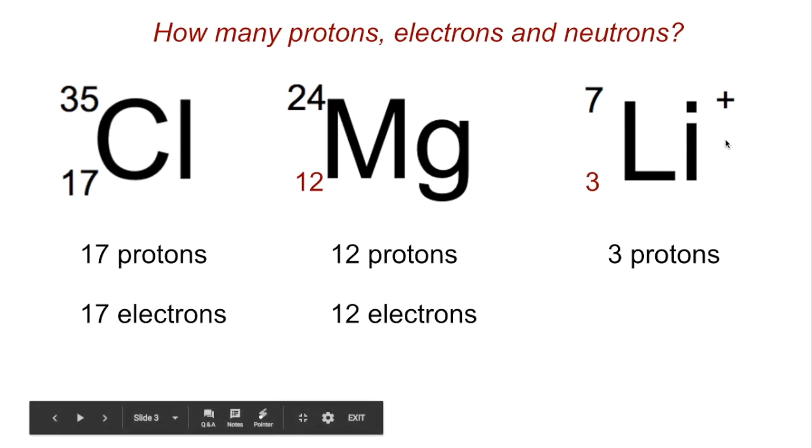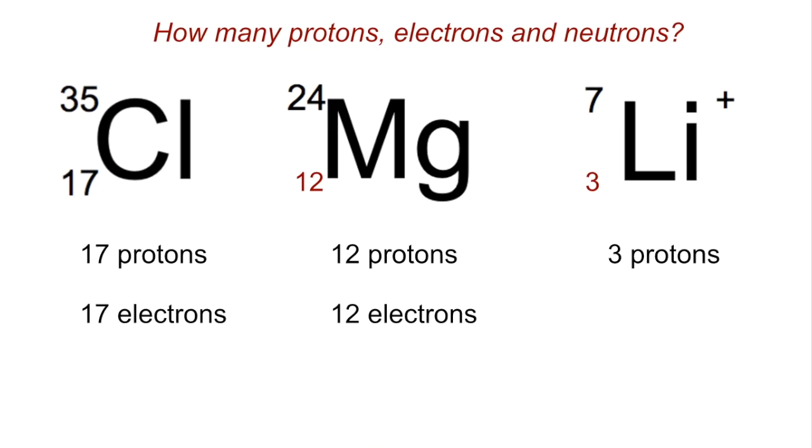Now lithium's a little bit different because I've gone for the ion instead. We can see there it's got a 1 plus charge, and that means it doesn't have the same number of protons and electrons. To give it the 1 plus charge, it must have one more proton than electron, and so it's got 2 electrons.